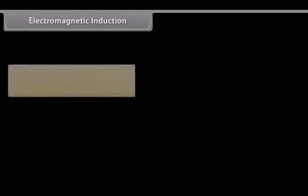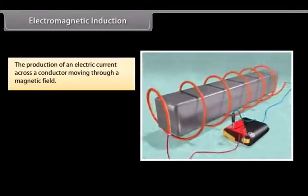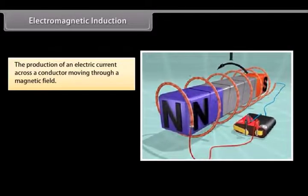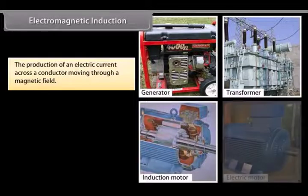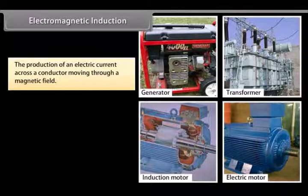Electromagnetic Induction. The production of an electric current across a conductor moving through a magnetic field is called electromagnetic induction. For example, generators, transformers, induction motors, electrical motors, synchronous motors, and solenoids all use electromagnetic induction.